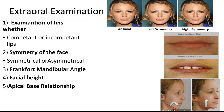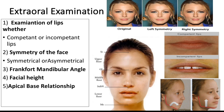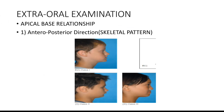The Frankfort-mandibular plane angle tells us whether the patient has a long face, short face, or square face shape. Next is facial height — whether it is increased, decreased, or normal.